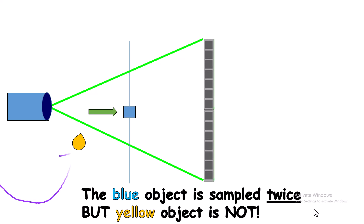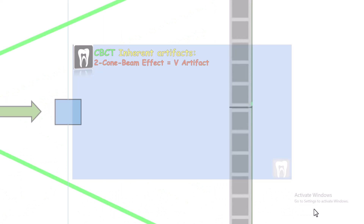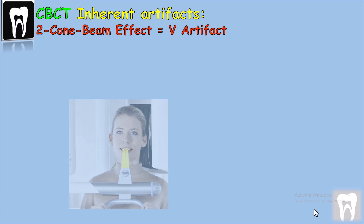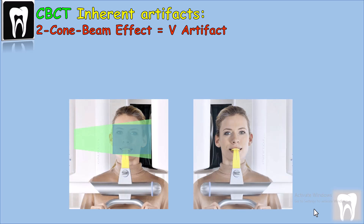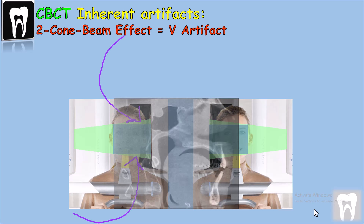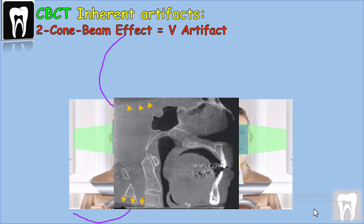The center parts receive the maximum amount of data collected by the detector for reconstruction, but at the periphery, the amount of data collected is less. The red graph shows the effect of inadequate data at the periphery — that would be the superior and inferior regions. This is seen at the edges or peripheral portions of the image, resulting in streak artifacts and noise in the peripheral area.